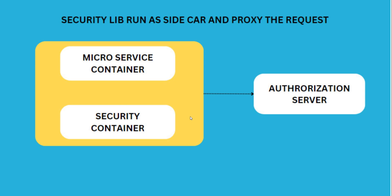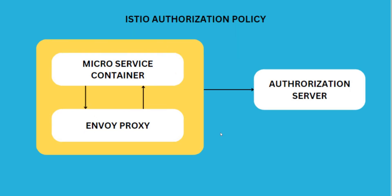The security container acts as a proxy handling the security. Another related way is where we don't need to write any code — we only concentrate on the business logic. We use Istio authorization policy with an Envoy proxy, and Istio authorization policy handles the authentication and authorization for your microservice.